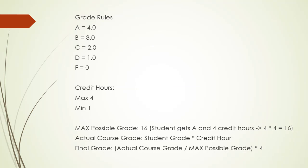Here are the rules. If the student gets an A, they get four points; for B it's three points; for C two; D one; and for F it's zero points. The credit hours maximum is four and minimum is one. So if the user gets an A for four credit hours, the actual grade is four times four which is sixteen. If the user gets a B for two credit hours, the actual course grade would be six — three times two.